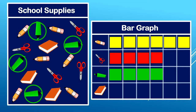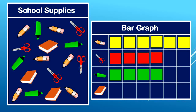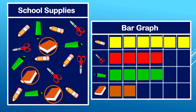Last but not least we have our books. One, two, three. Here they go in the book row: one, two, three.